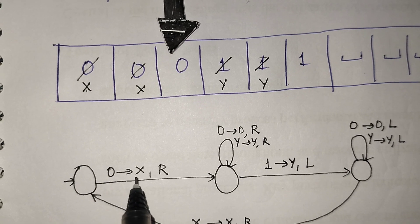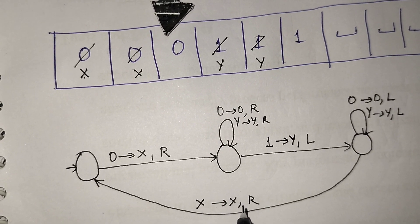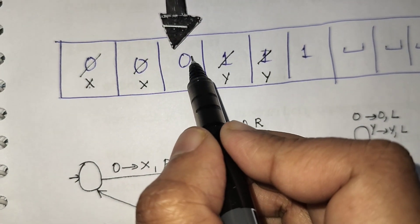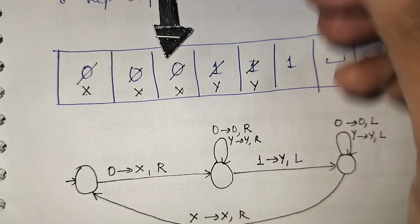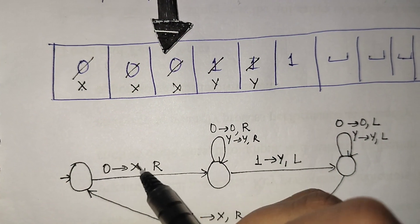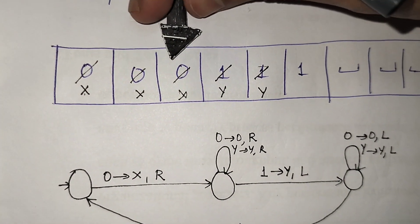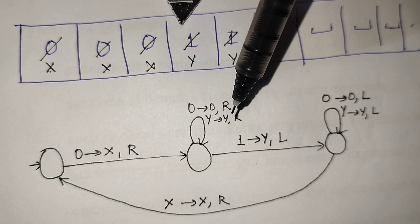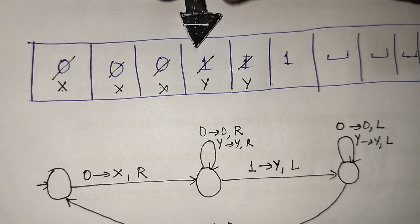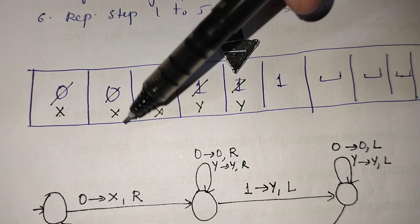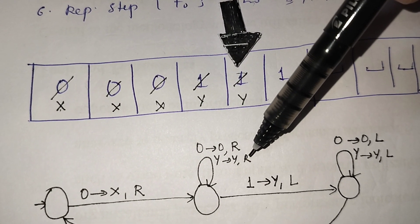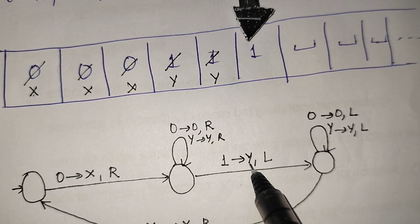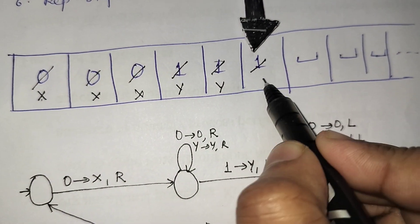Whenever I see a 0, after seeing x don't do anything — just keep moving towards right. Then if you see a 0, replace it with x. Keep moving towards right. Replace 0 with x, keep moving towards right. If I see a y, don't do anything — keep as it is, move towards right. Again seeing y, don't do anything, move towards right. In the right I see a 1 — whenever I see a 1, replace it with y. Then move towards left.